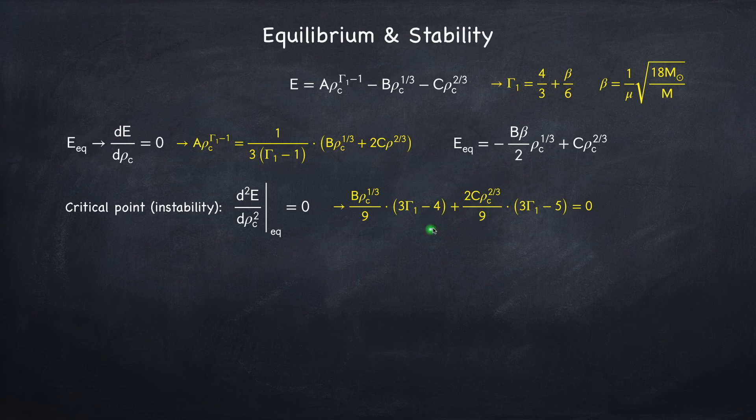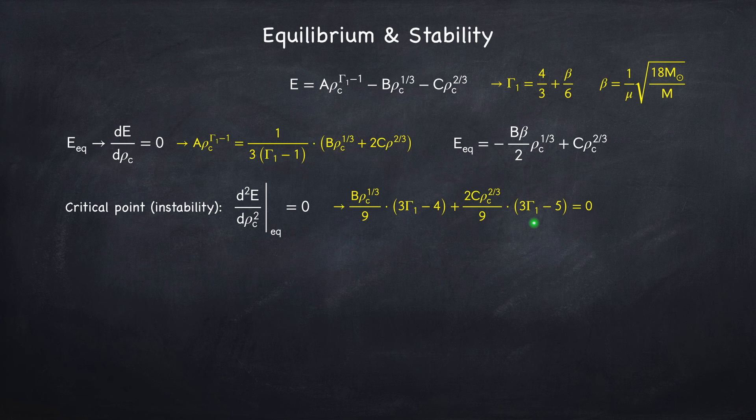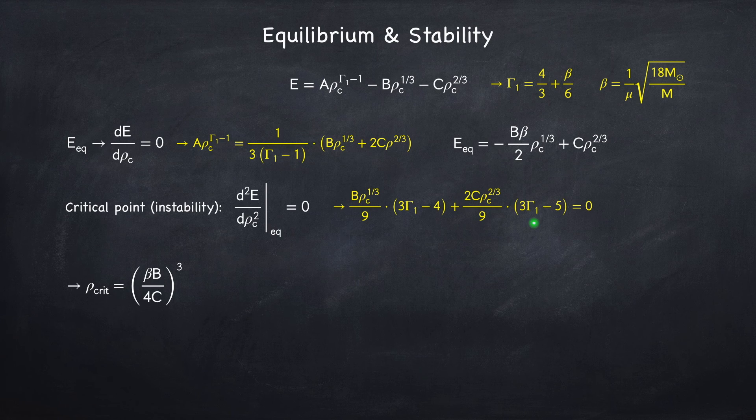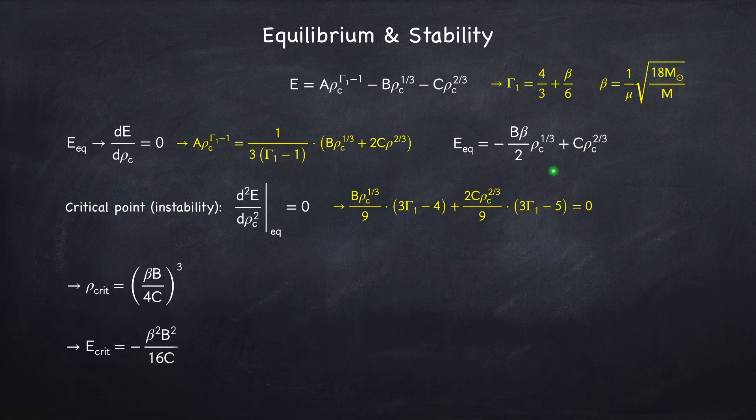Now this term is going to be of order beta, because gamma 1 is 4 thirds plus beta over 6, so 3 gamma 1 minus 4 will be 3 times beta over 6. The second term comes from the GR correction, so this first factor is already small, and so we can simply set gamma 1 to 4 thirds here and ignore the correction of beta over 6, because that will be a higher order correction. So 3 gamma 1 minus 5, if gamma 1 is 4 thirds, is just negative 1. Now we solve this equation for the central density to get an expression for the critical density. So this is the central density when instability sets in.